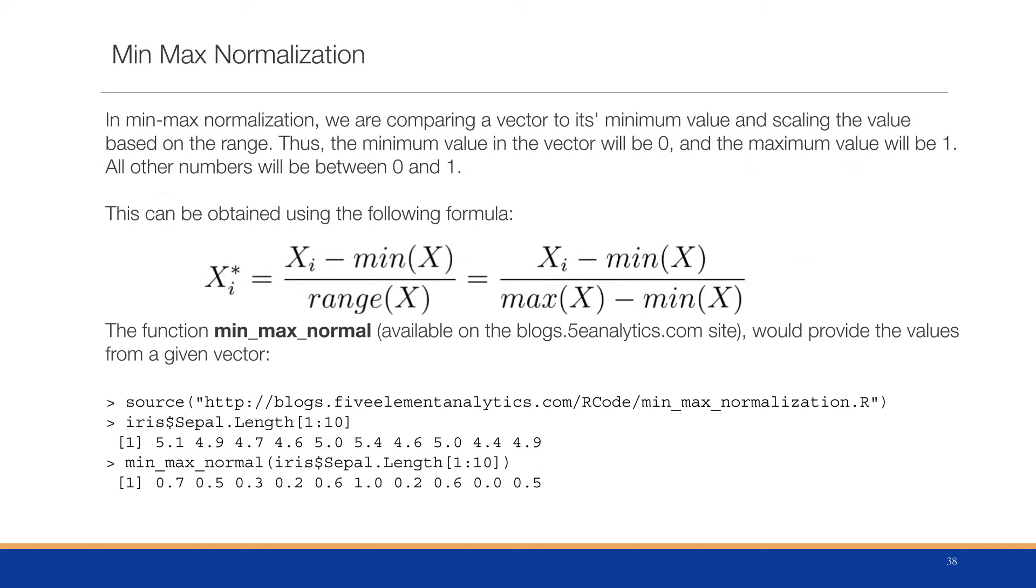In min-max normalization, we're comparing a vector to its minimum value and scaling the value based on the range. Thus, the minimum value in a vector would be zero and the maximum value will be one.